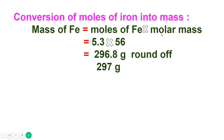To convert moles of iron to mass: the molar mass of Fe is 56 g/mol. Mass = 5.3 moles × 56 g/mol = 296.8 grams, which rounds to 297 grams. To find the mass in grams you simply multiply the number of moles by the molar mass.